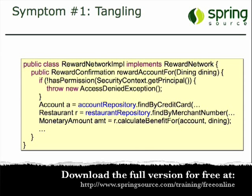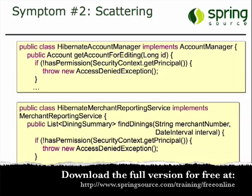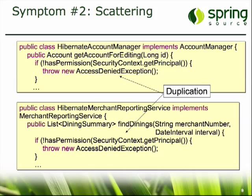This is an example of code tangling — we've got security code mixed up with our application code, a mixing of concerns. This is an example of code scattering. I've got this same security code scattered across potentially lots of places in my application. Maybe we've copy-and-pasted that code into every one of our methods where we need to carry out a security check. Those are examples of code tangling and code scattering — both problems that we want to avoid.